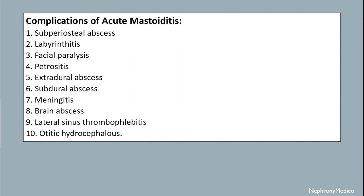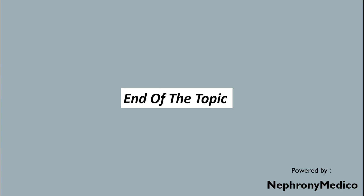Complications of acute mastoiditis include subperiosteal abscess, labyrinthitis, facial paralysis, petrositis, extradural abscess, subdural abscess, meningitis, brain abscess, lateral sinus thrombophlebitis, and otitic hydrocephalus. End of topic.